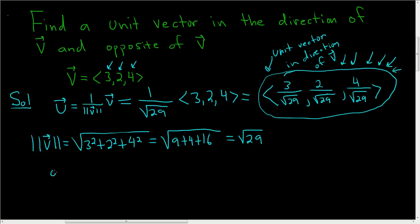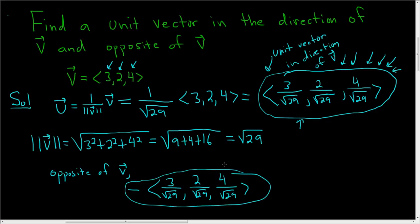To find one opposite of v, well, we just multiply this answer by negative 1. So negative 3 over square root 29, negative 2 over square root 29, and negative 4 over square root 29. And that's the one that is opposite of v. I hope this helps.